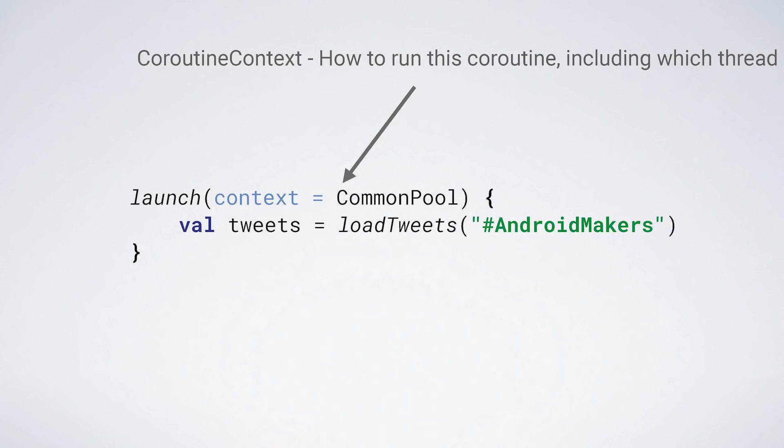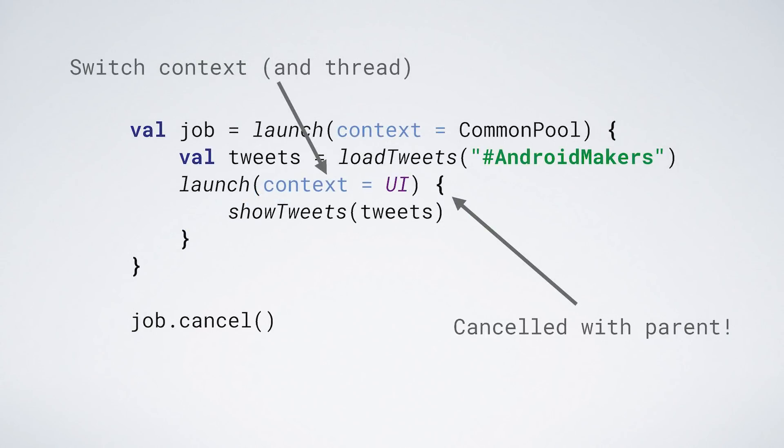Rather than blocking a thread — which is expensive — coroutines have a little bit of state and just kind of stop and say, 'I'm sitting back here for a while,' then return later with all their state ready to resume. You still have threads, and you can decide what thread a coroutine runs on and even switch threads in the middle of a coroutine. Thanks to that, you can build some really powerful DSLs and syntax utilities.